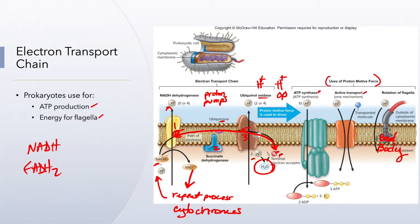Once NADH drops off its electron, it goes out and collects more. FADH2 drops off its electron at subunit two. Because it drops off at subunit two, its electron will only power one cytochrome instead of two, which is why FADH2 produces less ATP — fewer hydrogen ions are pumped across the membrane.